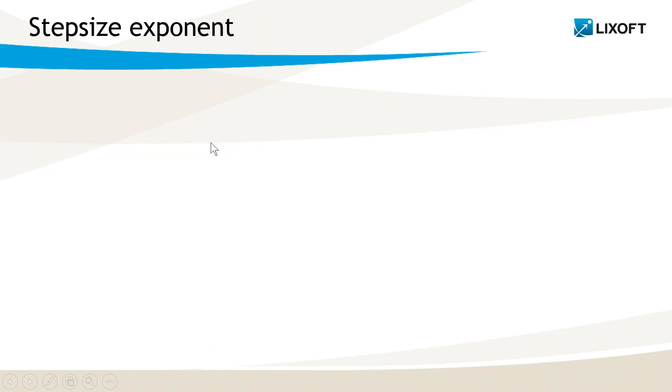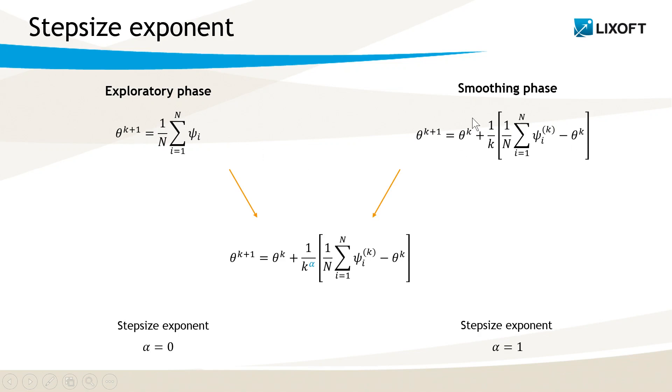The next setting I would like to explain is the step size exponent. At the second step of each SAEM iteration, we calculate the new population parameters from the sampled individual parameters. The formula used for the exploratory phase is this one and the one for the smoothing phase is this one. But in fact, we can rewrite those two formulas as this one here, where I have added the alpha.